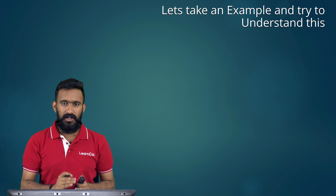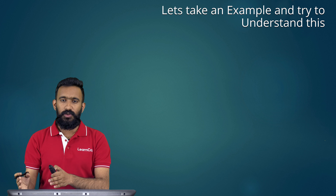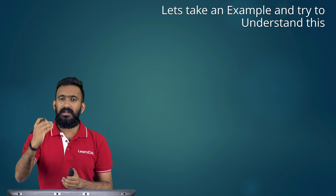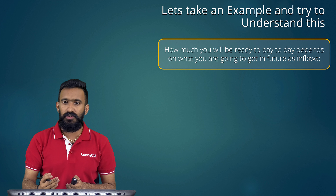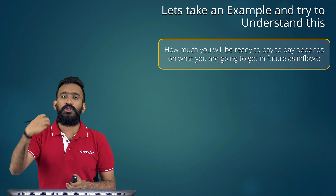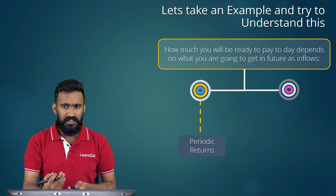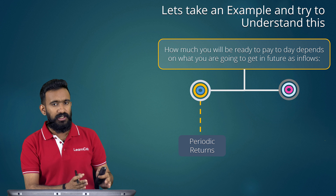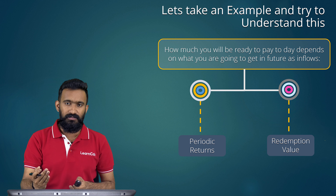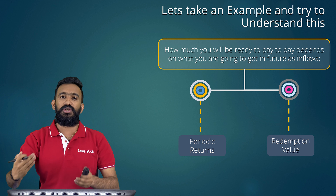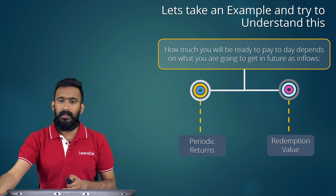Let's take an example to understand this. I told you there could be two types of values: intrinsic value and market price. Let's try to calculate how you derive the present value of your future returns. How much you're ready to pay today depends on how much you're going to get in the future. In the future you're going to have two types of returns: periodic returns and redemption value. In our example, for 4 years to come you're going to get a yearly income of 100 rupees each, and at end of year 4 you also receive 1200 rupees when you sell the asset.